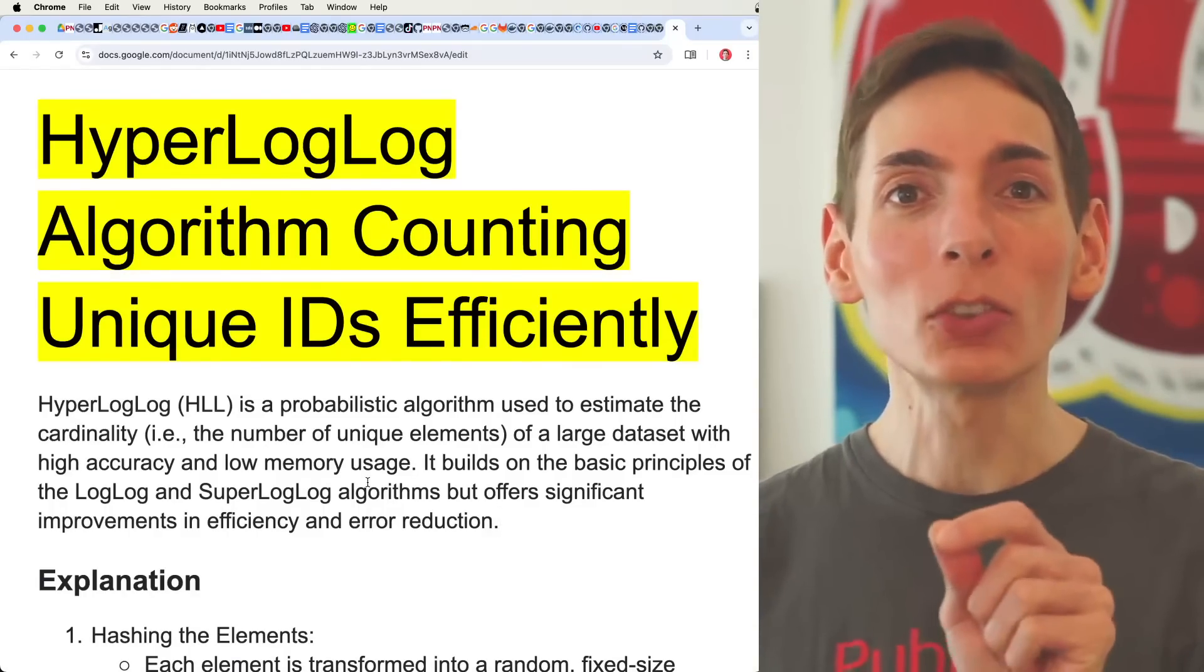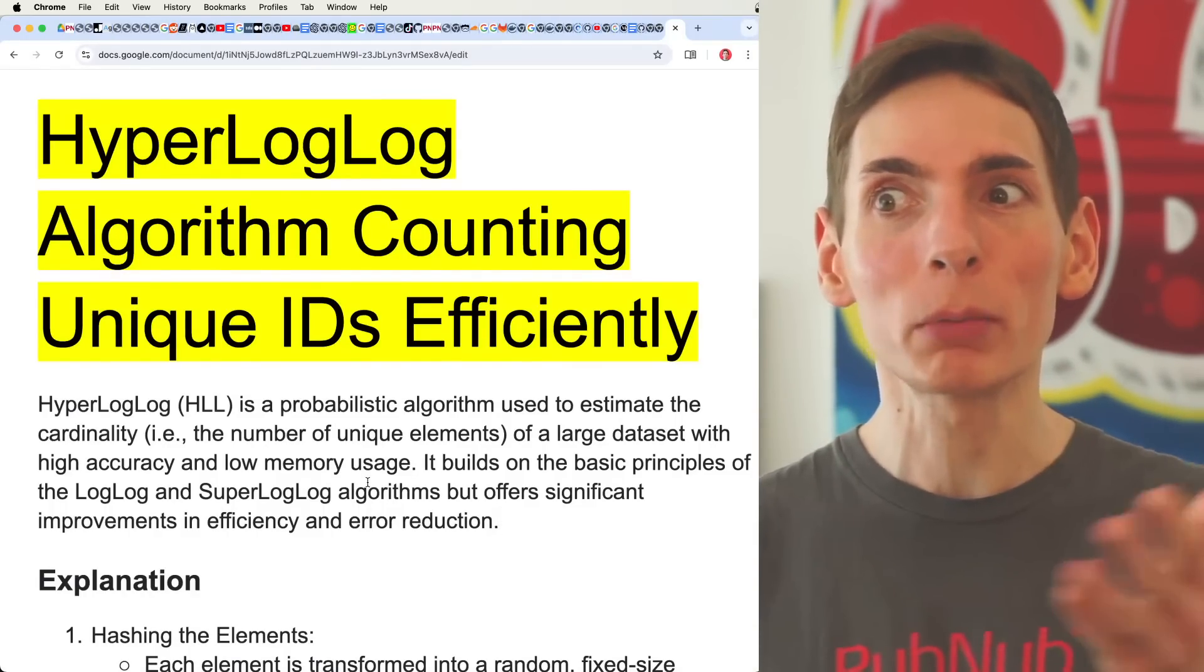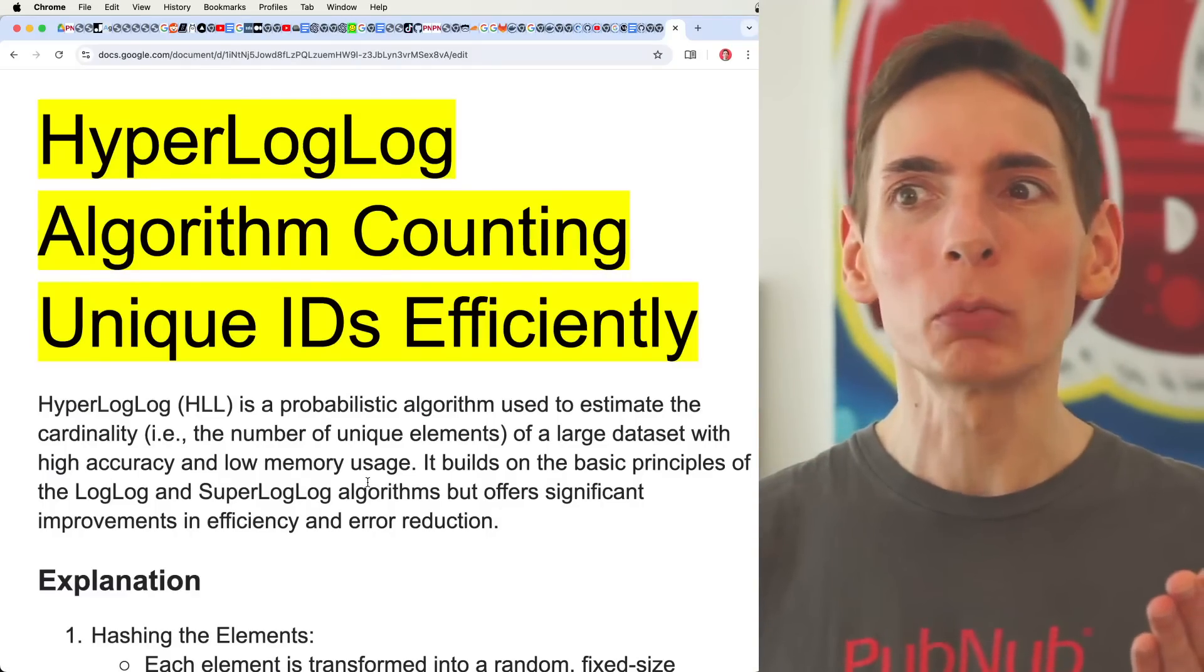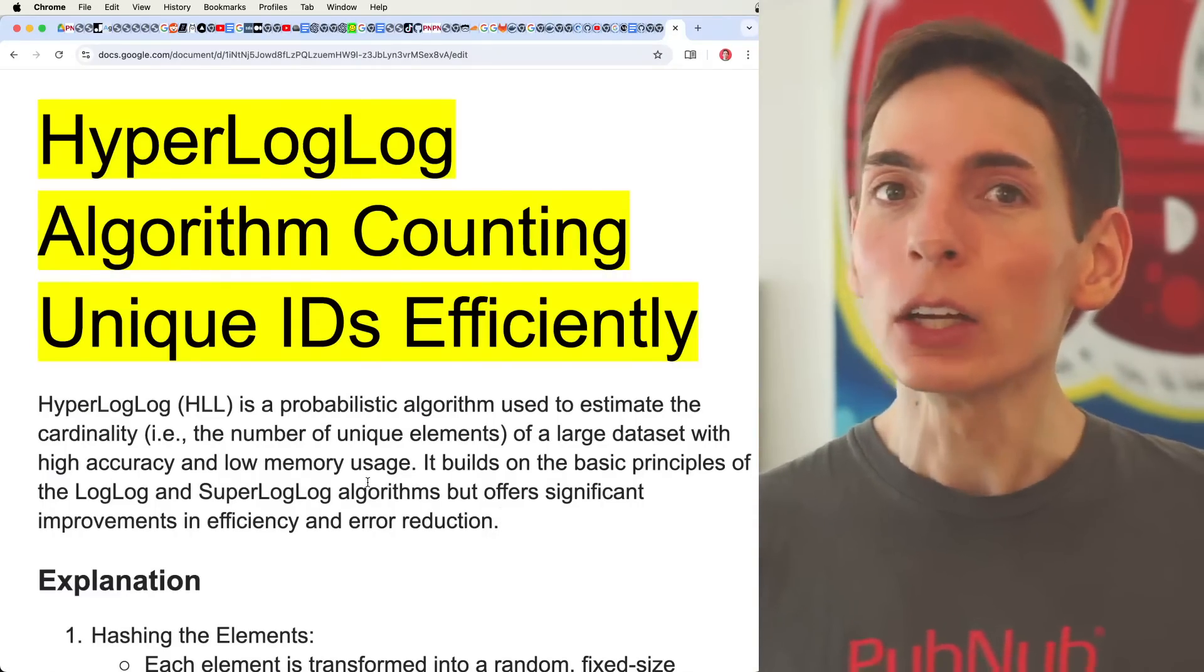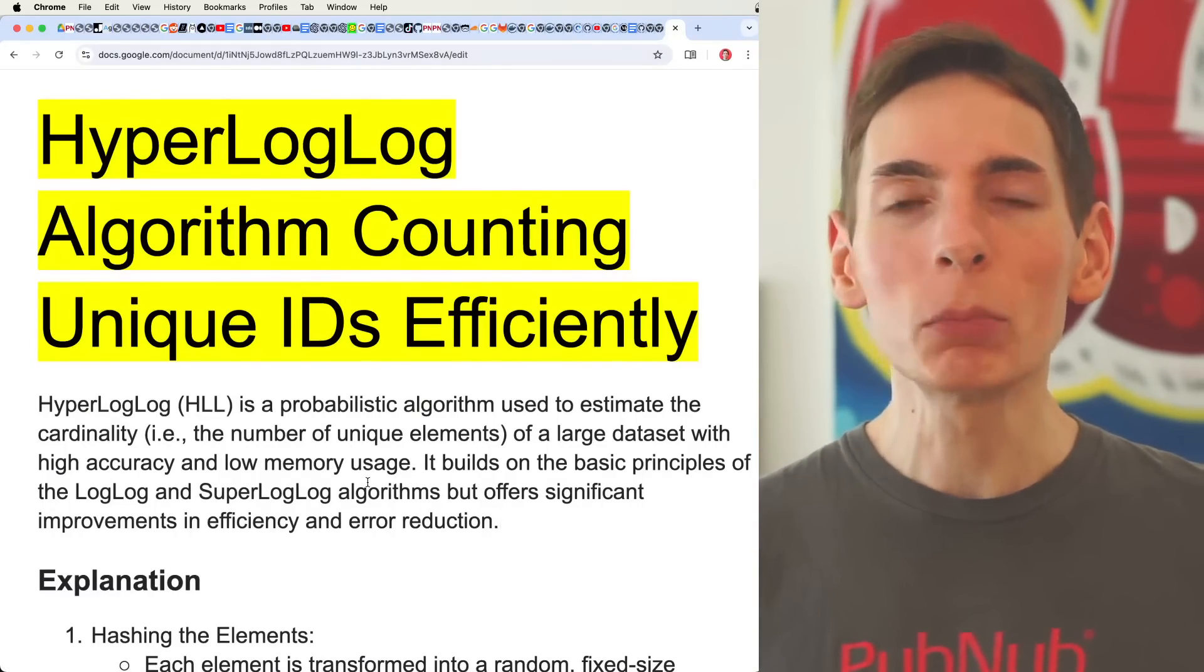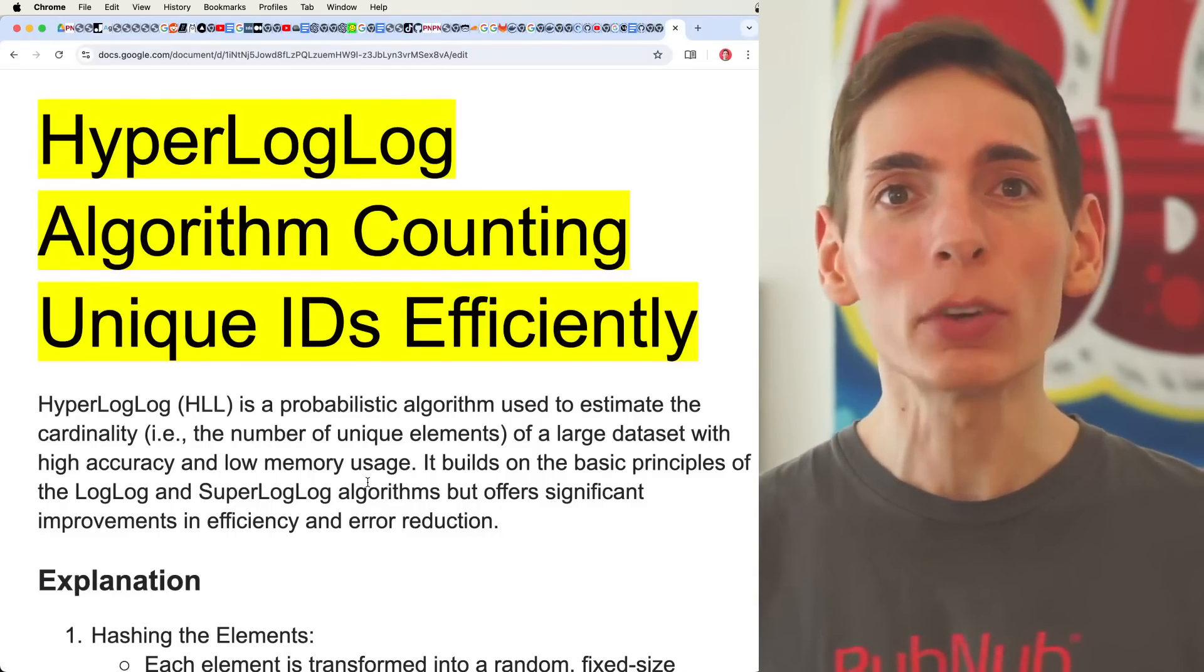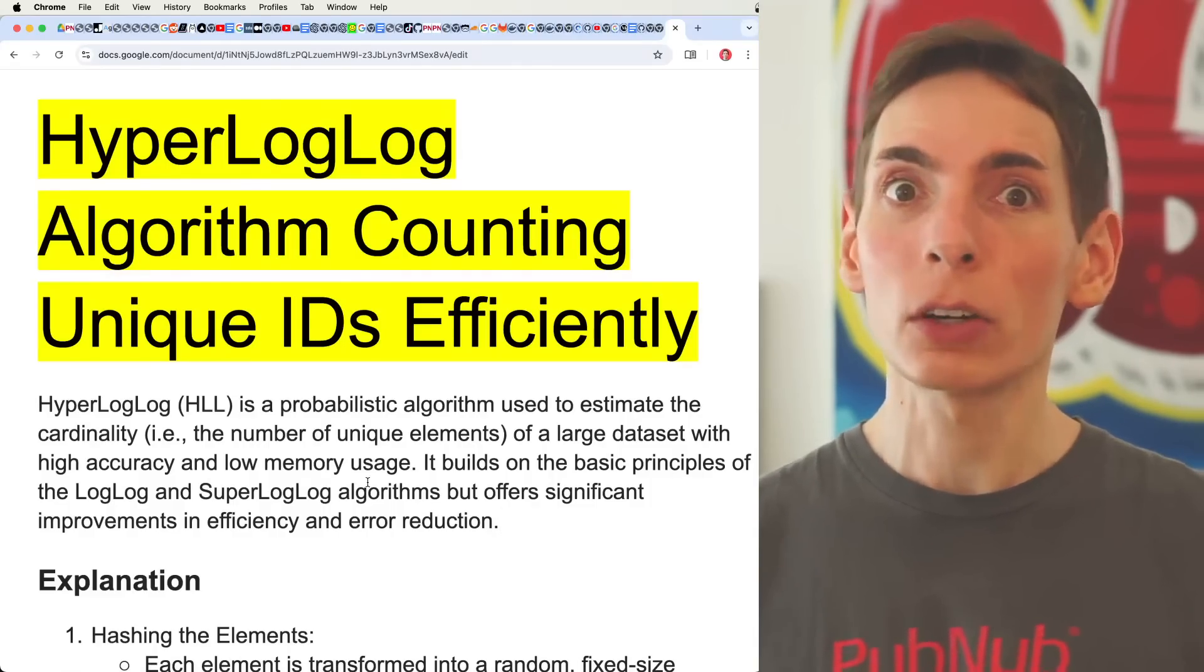Here's the problem - if you try to do this yourself without a HyperLogLog-style statistical probabilistic algorithm, you will run out of memory really quickly. You can run into gigabytes, hundreds of gigabytes of memory required in order to maintain a list of items that are in the large number ranges.